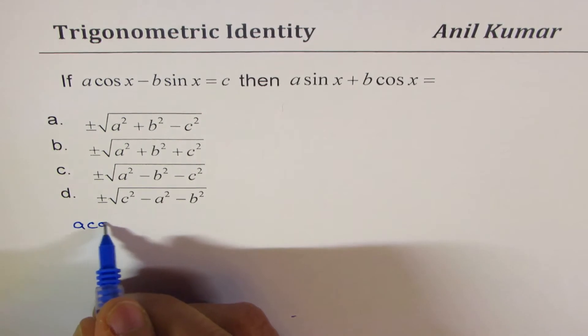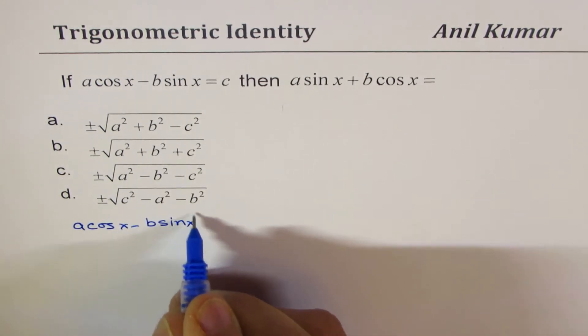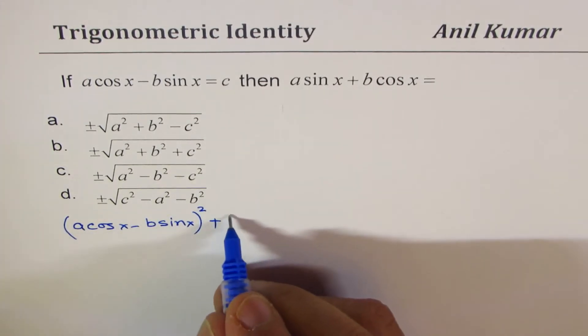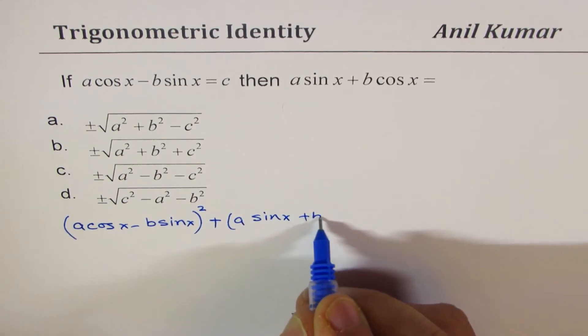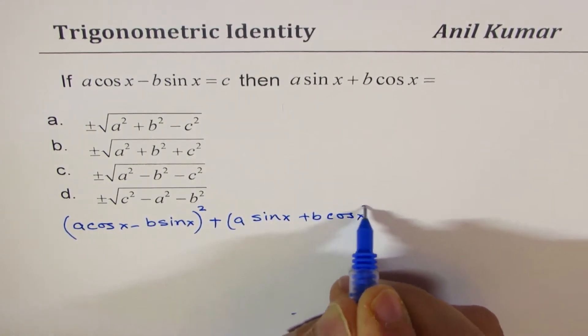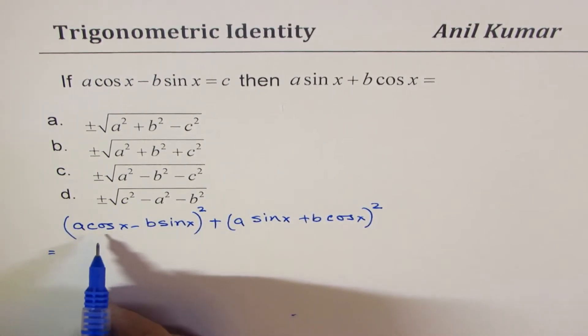So we have A cos x minus B sin x. We'll square this term and add with the square of the other term, which is A sin x plus B cos x. So if I square and add, what do I get?